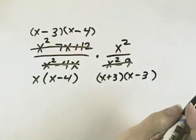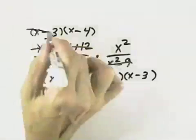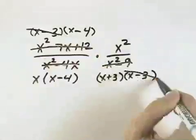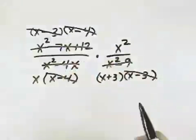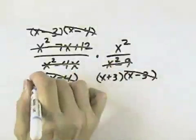Now we can cancel any common factors as long as one is in the numerator, such as the x minus 3, and one is in the denominator. We also have a common factor of x minus 4 and x minus 4, and then finally a common factor of x.